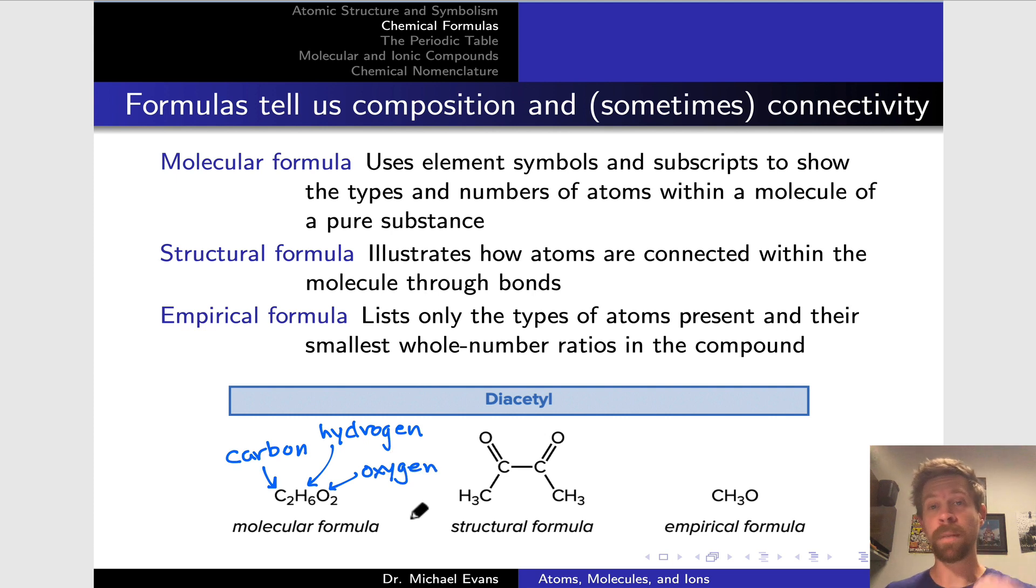Within a molecule of diacetyl, we have two carbon atoms, six hydrogen atoms, and two oxygen atoms. That's what we call the molecular formula. It gives us insight into the composition of the molecule for molecular substances.